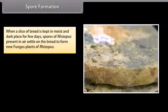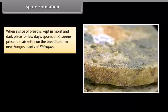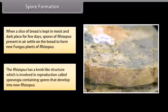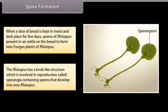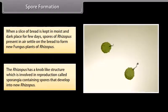When a slice of bread is kept in a moist and dark place for a few days, spores of Rhizopus present in the air settle on the bread to form new fungus plants of Rhizopus. Rhizopus has a knob-like structure involved in reproduction called sporangia, which contains spores that develop into new Rhizopus.